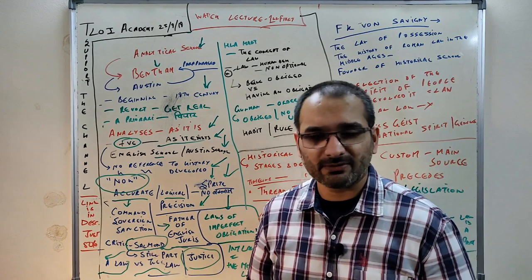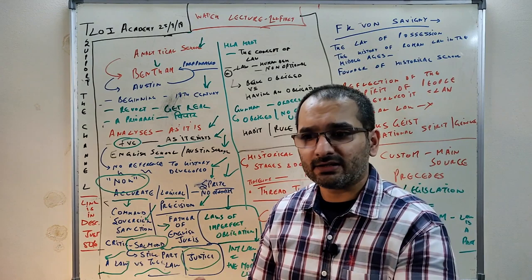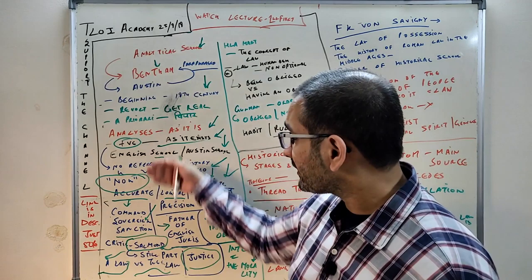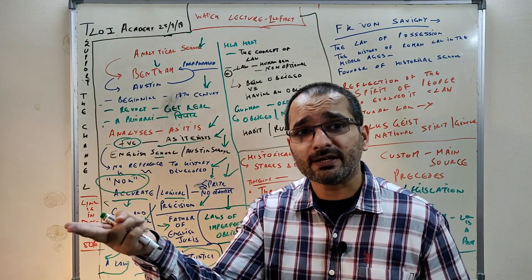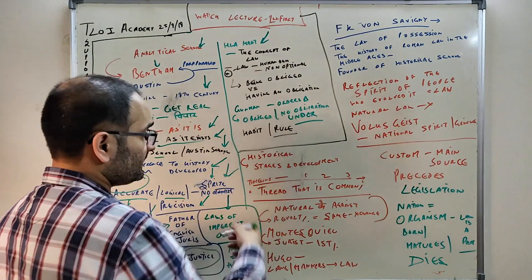Austin said these are laws of imperfect obligation, not laws according to him. He also said international law is just morality, not law at all, because there's no sanction. You don't get penalties. And regarding sovereign - if India and Iran are talking, who is above them? You can't really command each other. So as per Austin, these are toothless tigers. That is the core crux of the analytical school combined with what we discussed. You can give examples from DPSPs, international law, or Contract Act in your first semester exam.